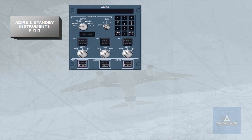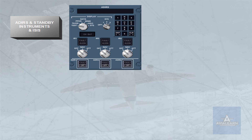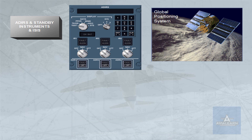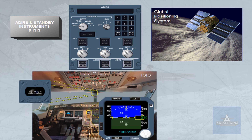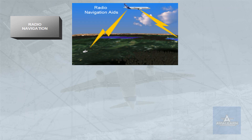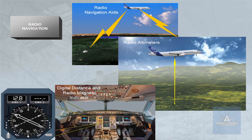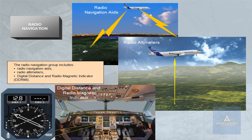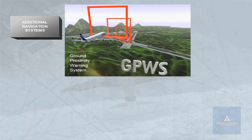The first group includes air data inertial reference units (ADRU), global positioning system (GPS), standby instruments, compass, and ISIS. The radio navigation group includes radio navigation aids, radio altimeters, and digital distance and radio magnetic indicator (DDRMI).